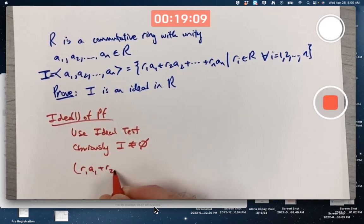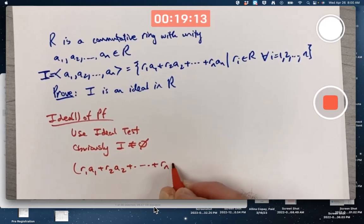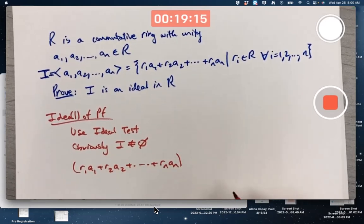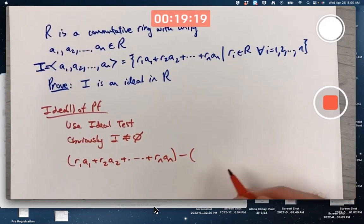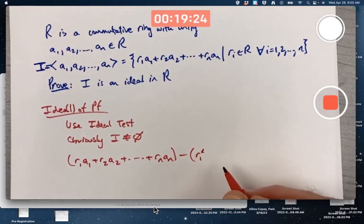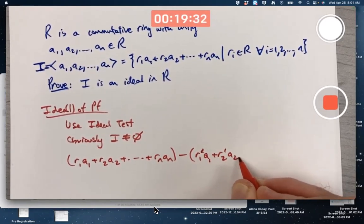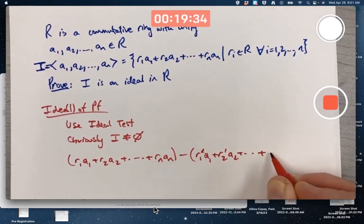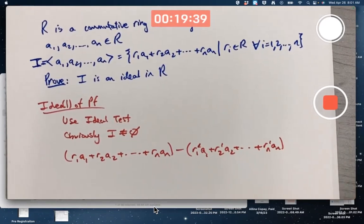Write two arbitrary elements in this set. There is one arbitrary element. Subtract another. How should I make the notation different? Well, you could, for example, use prime notation on the R's, for example. Nothing to do with derivatives there, just different notation. These two linear combinations, if you will, would represent two arbitrary elements of I.